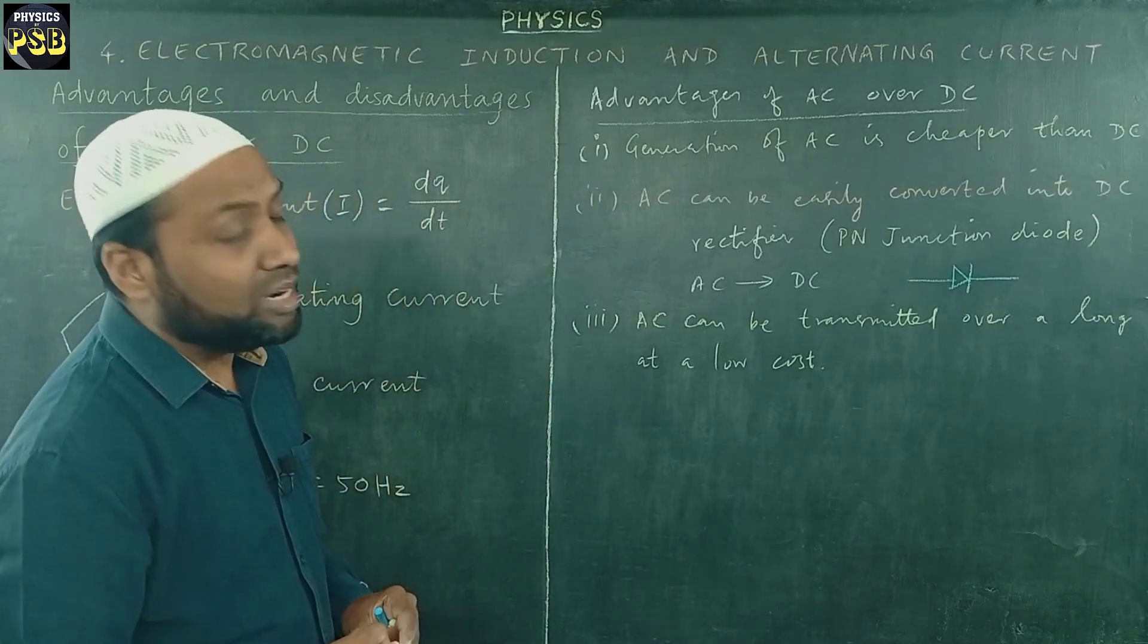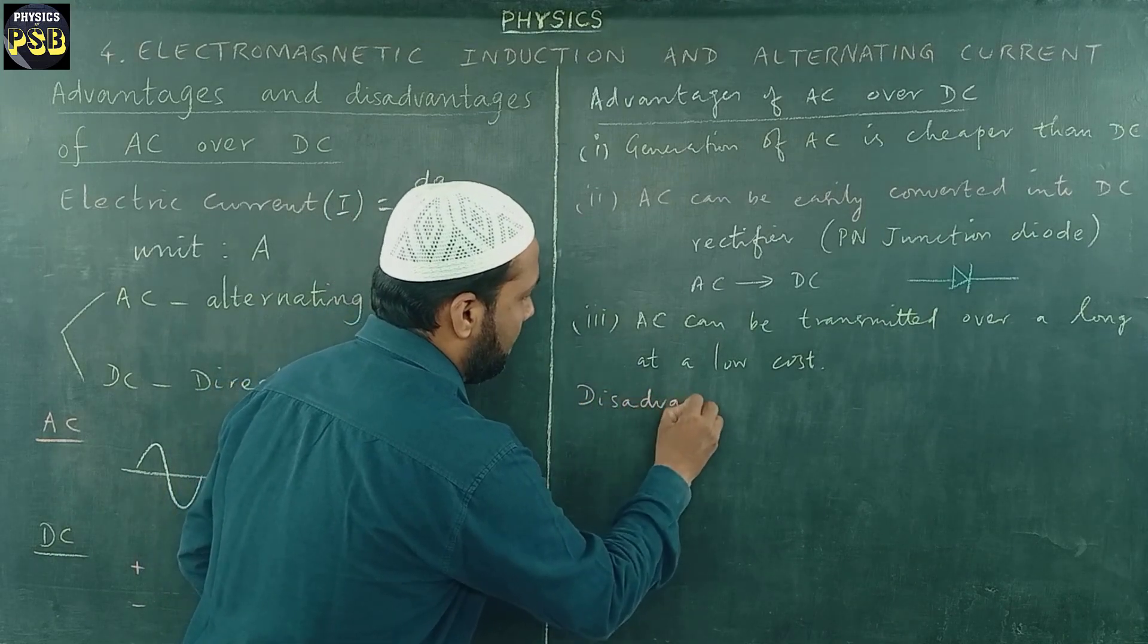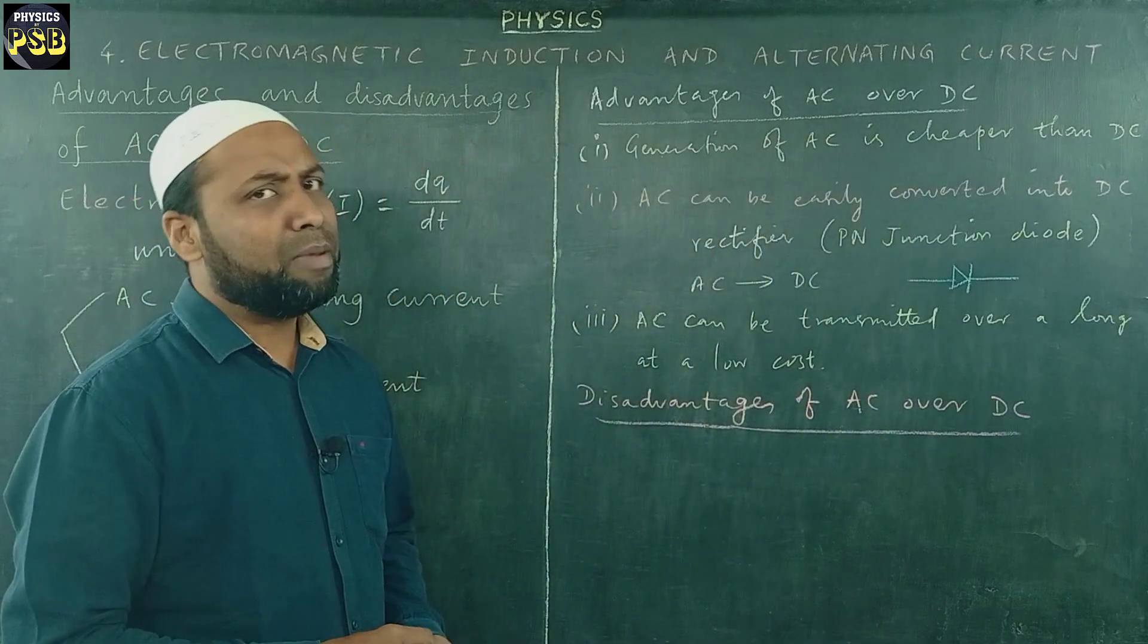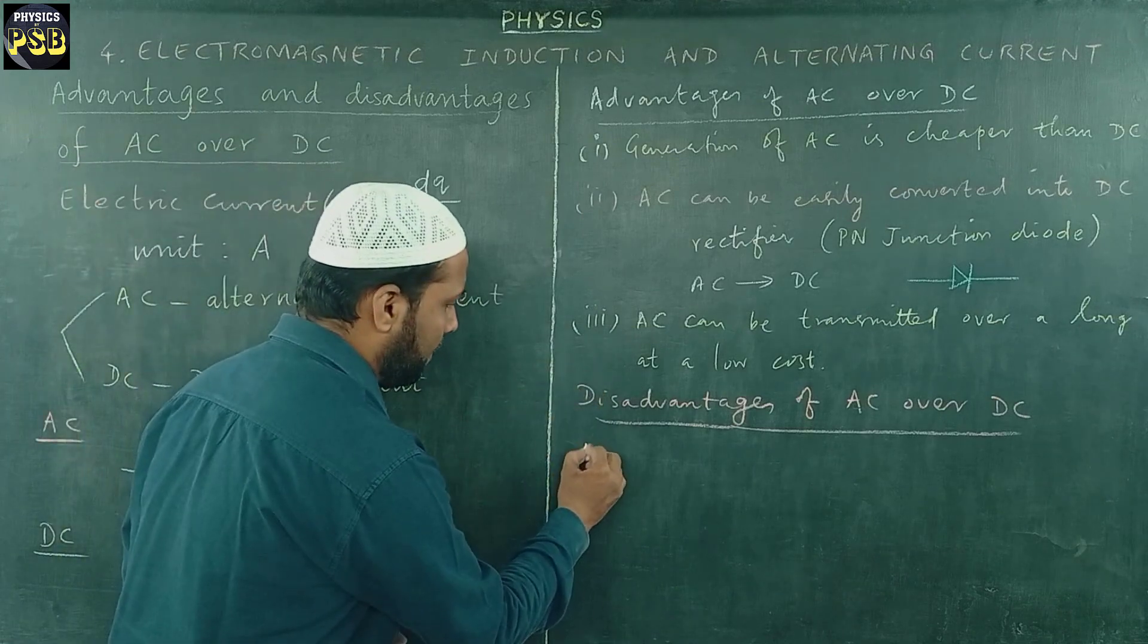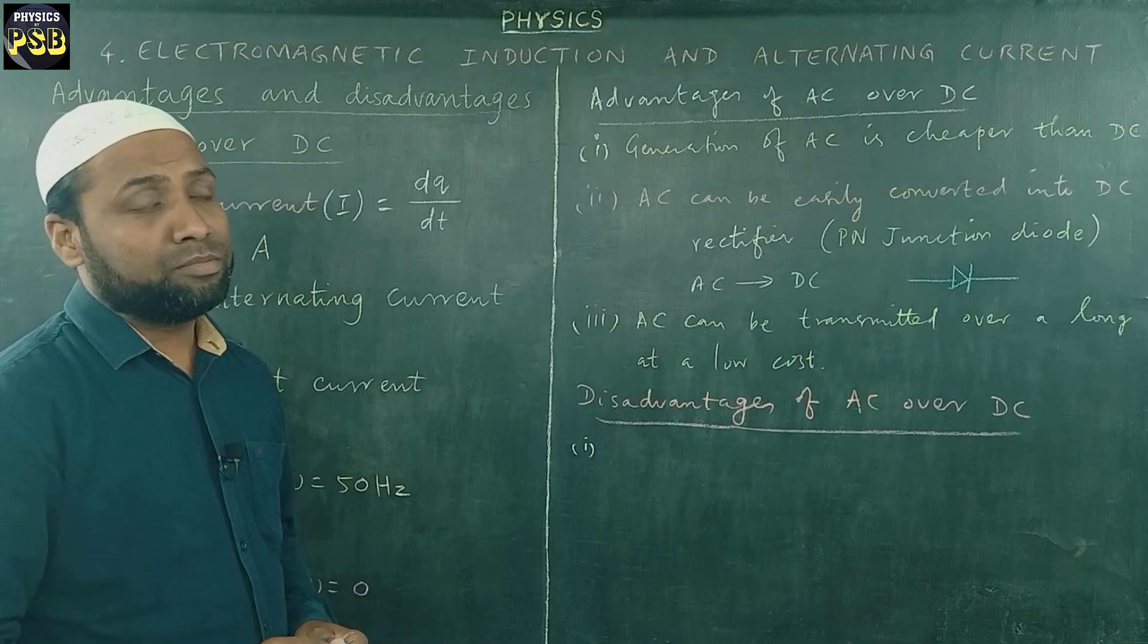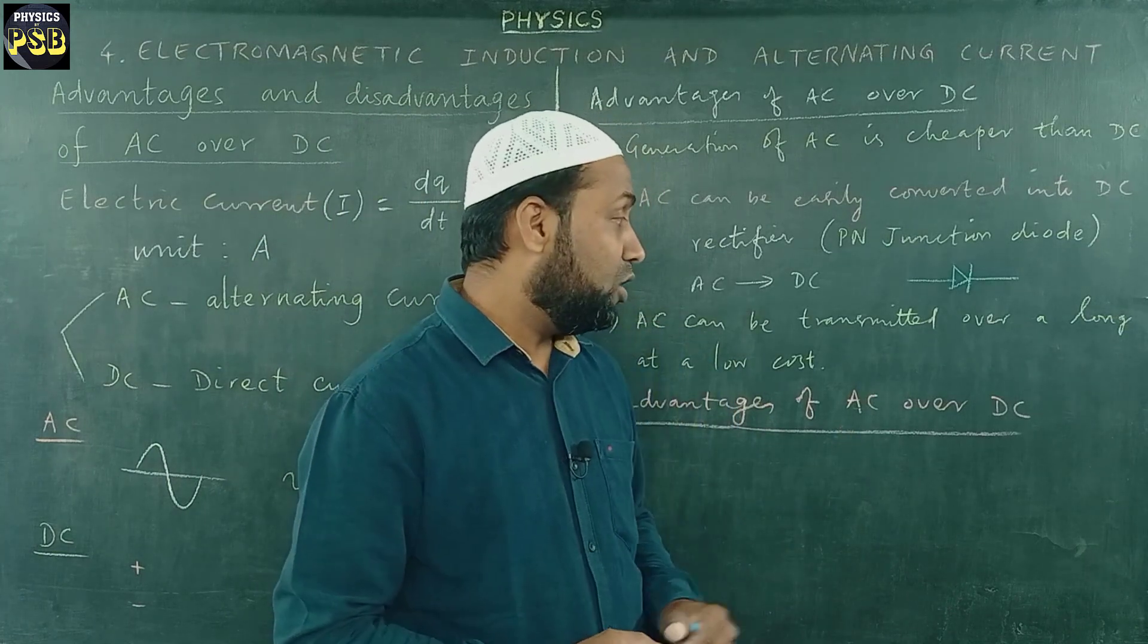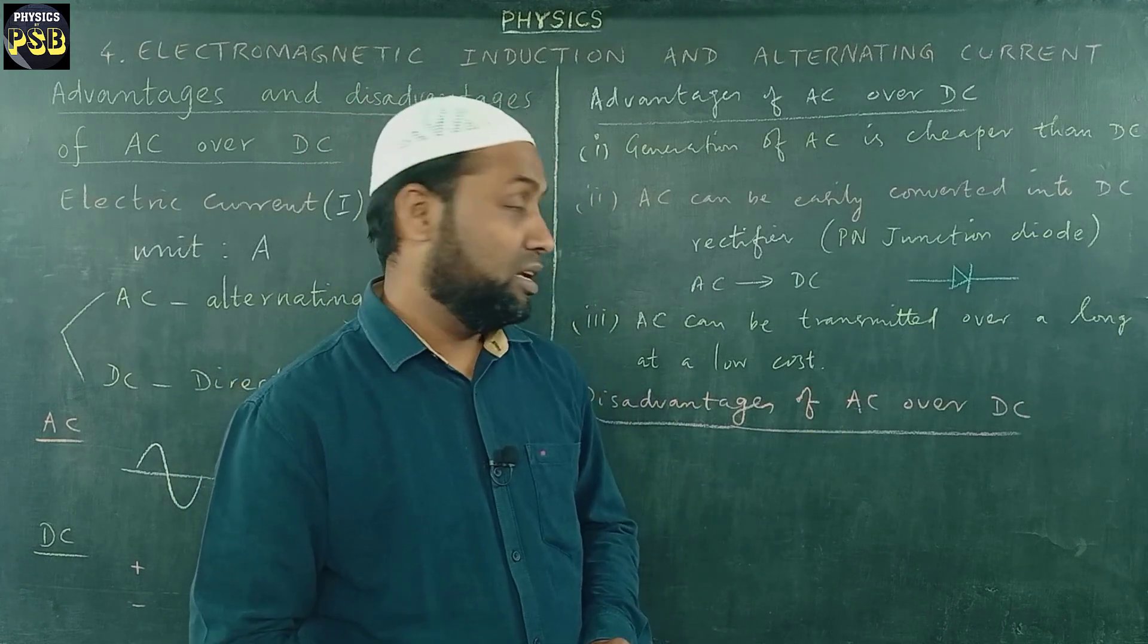Now, we will discuss some of the disadvantages of AC over DC. AC has got lesser disadvantages compared to advantages over DC. Let us discuss one by one. First, there are certain applications which cannot be carried out with the help of AC, like the charging of battery or cell cannot be done with AC. It can only be carried out with the help of DC. In a similar way, electroplating cannot be carried out by AC.